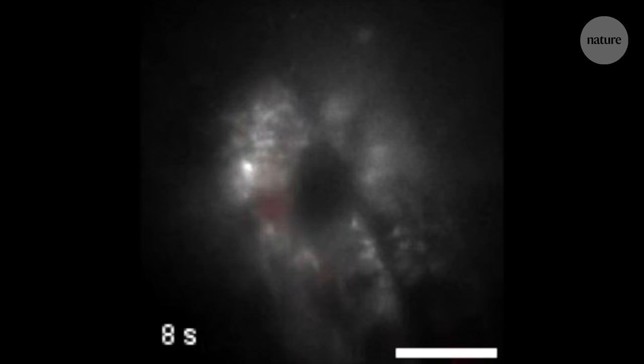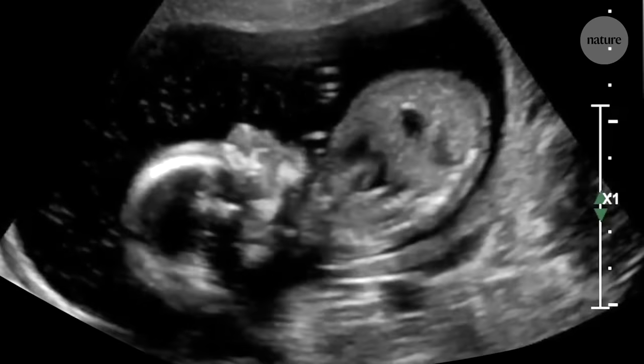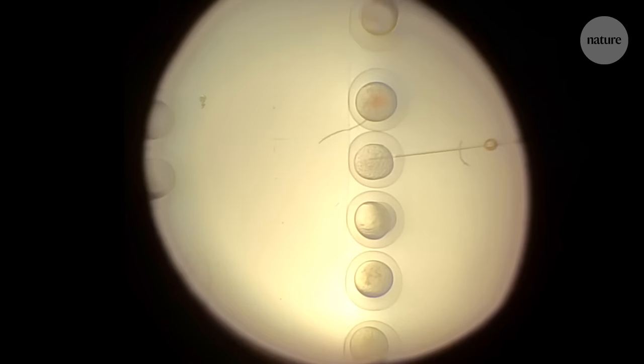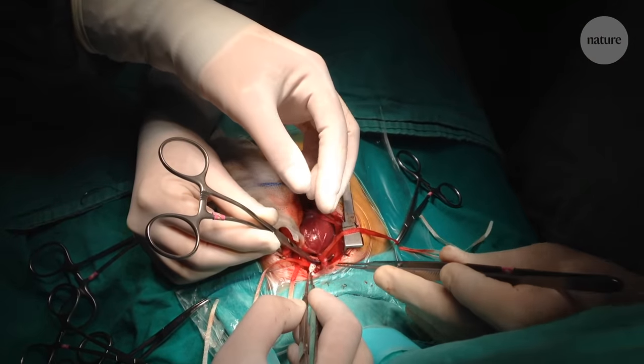Understanding this key point in development could help researchers study what goes wrong in embryos with congenital heart conditions, or it could be useful for engineering stem cells that can be implanted into a damaged heart and which need to sync up with the rhythm of the patient's own heart tissues.